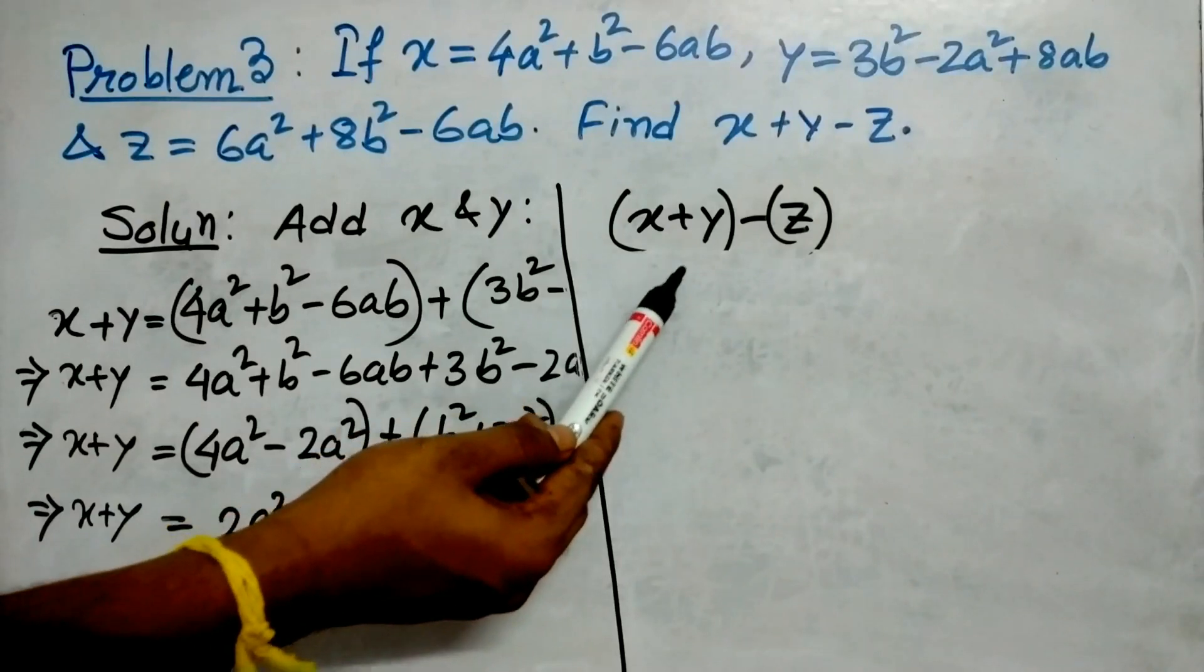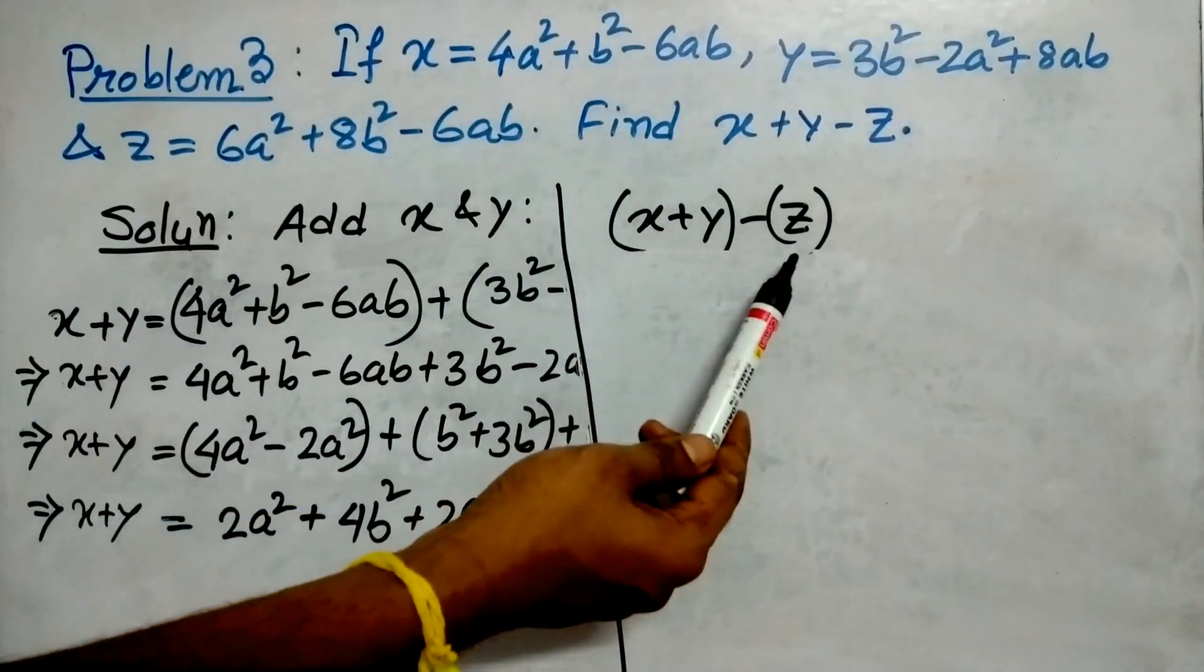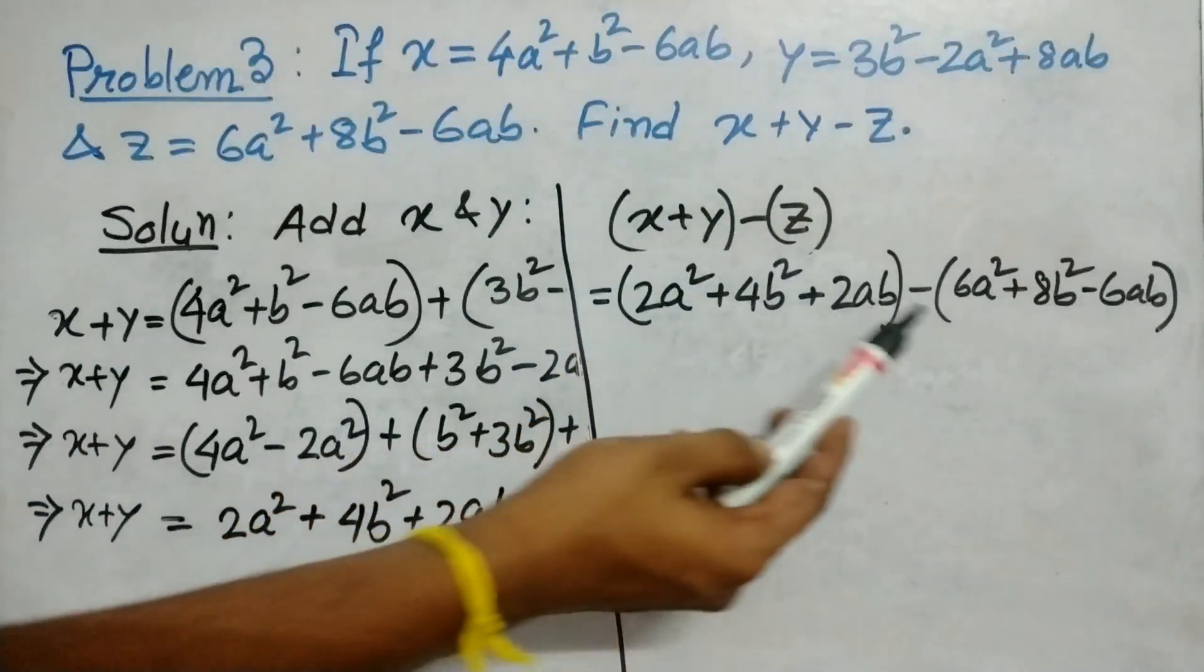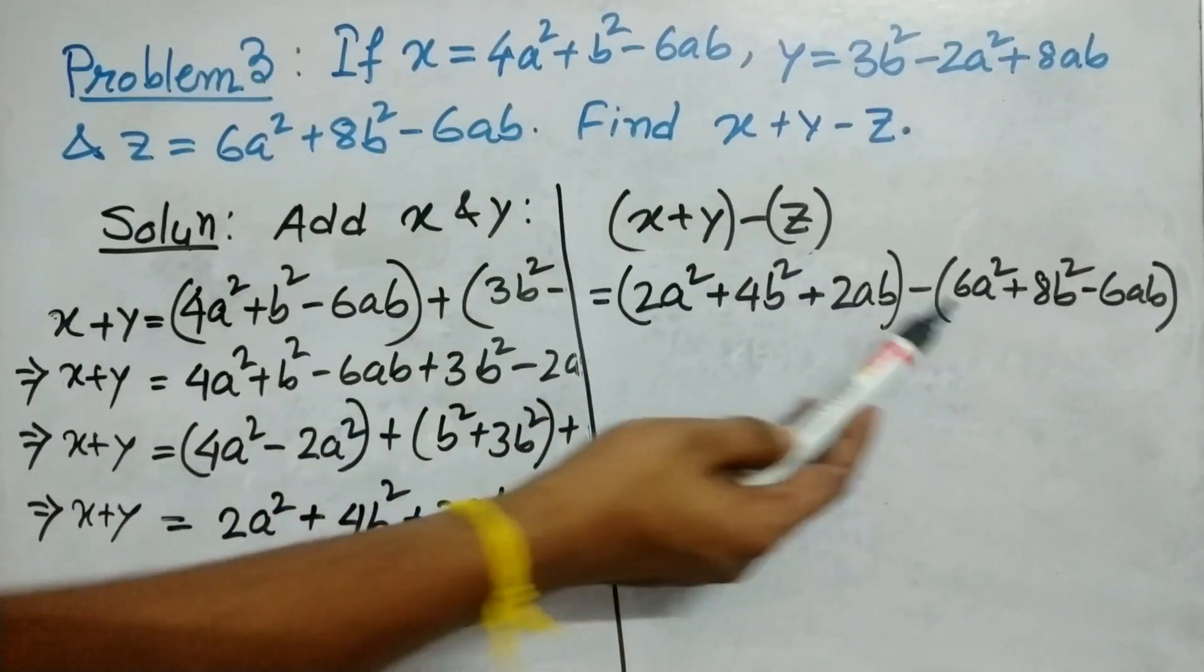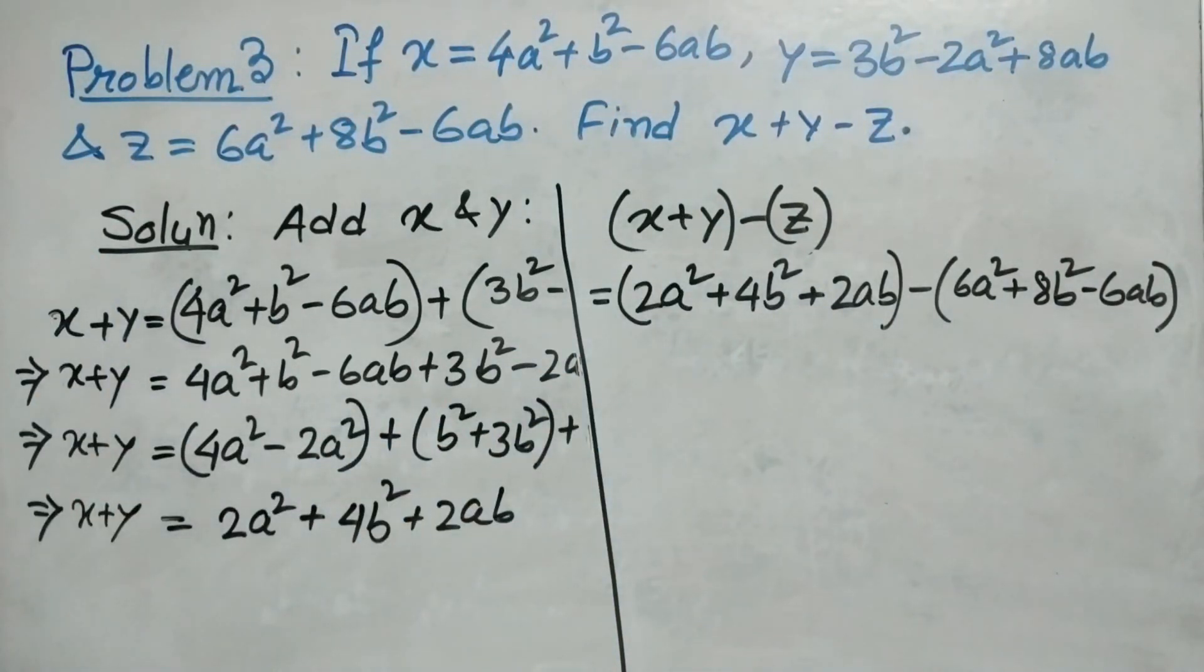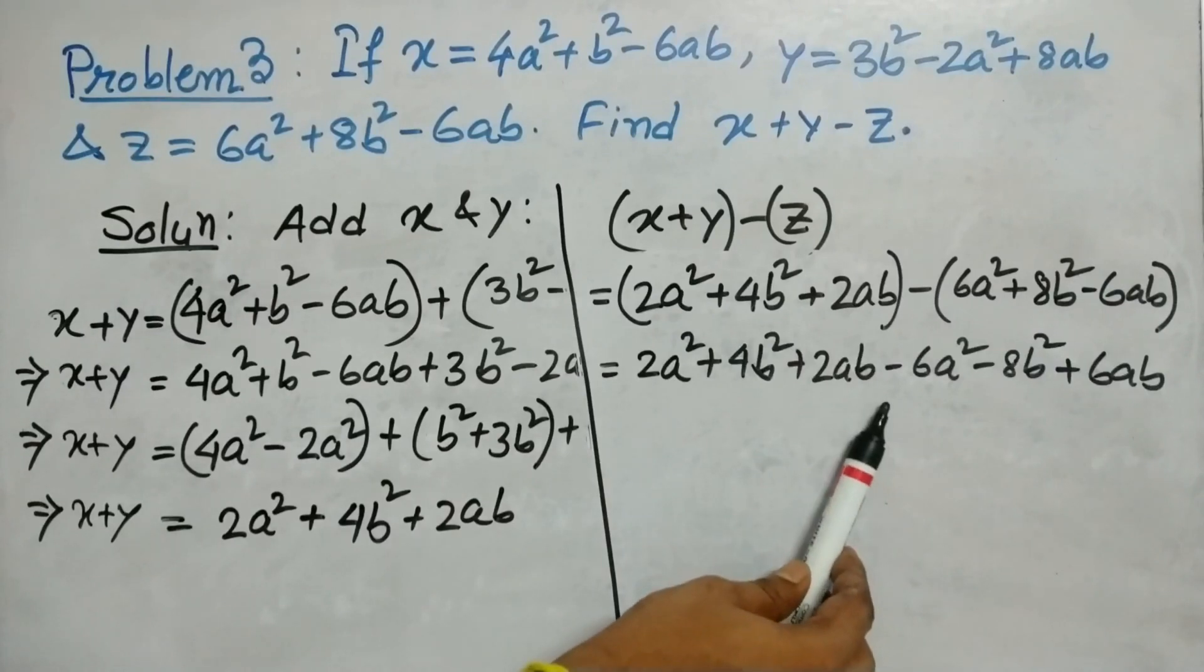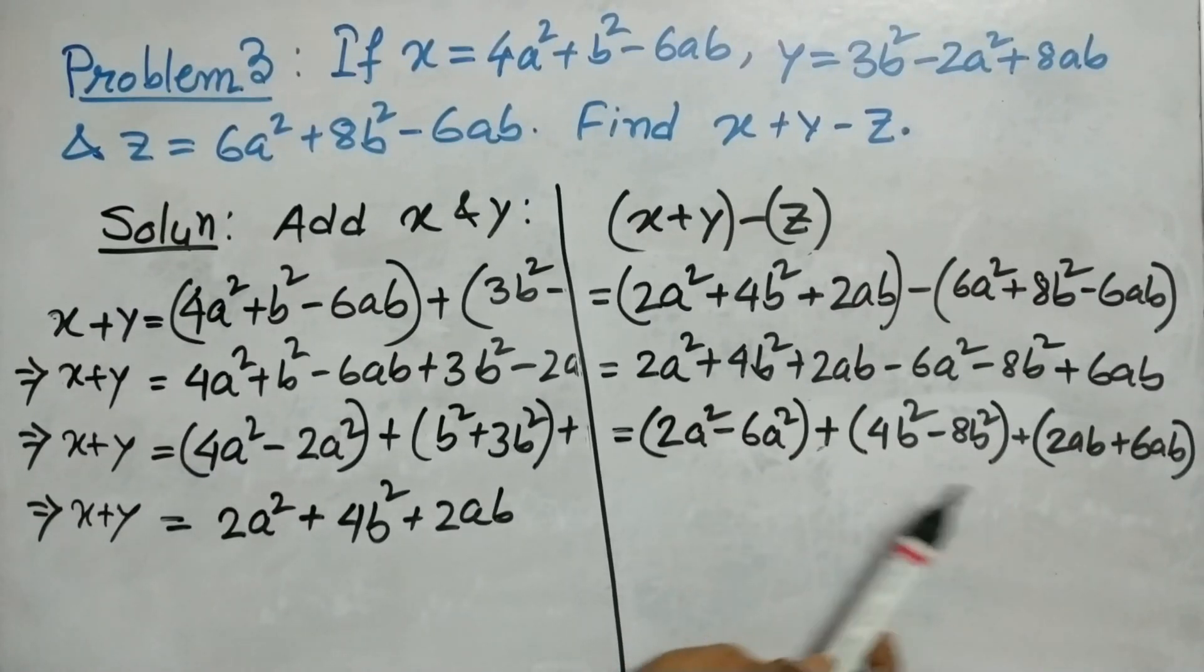Now we have to find x+y-z, that is subtract z from this result. This is the value of z given in the question. Our next step is to open the bracket. We have opened the bracket and changed the sign of each term.